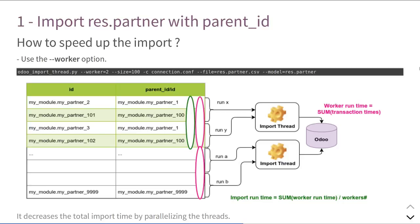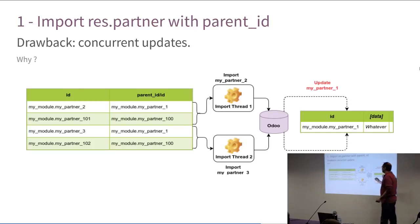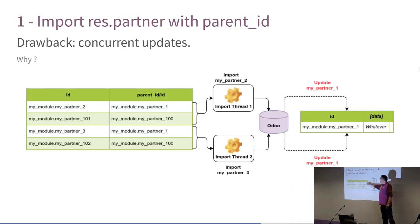But wait. When we are talking about multi-threading, we could have a drawback. And the drawback here is... Someone has an idea? Concurrent update. Yes. You have wonderful hearing. So remember me at the end. The drawback is concurrent update. Why? Let's suppose here I have a first import thread who has imported the first partner, my partner two. This one. When this record will be imported, it will trigger an update on the parent_id, that is my partner one. Why? Because the parent_id is a related field that is non-read only. The write method on the res.partner has been overridden. So it's like that. You will trigger an update on the parent. And if at the same time, another thread is importing another partner that has the same parent, then both threads will try to update the same record here. That's an issue.